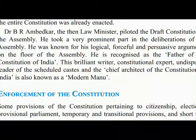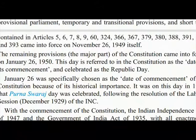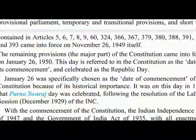Enforcement of the Constitution: Some provisions pertaining to citizenship, elections, provisional parliament, temporary and transitional provisions, and short title — contained in Articles 5, 6, 7, 8, 9, 60, 324, 366, 367, 379, 380, 388, 391, 392, and 393 — came into force on November 26, 1949 itself. The remaining provisions, the major part of the Constitution, came into force on January 26, 1950.